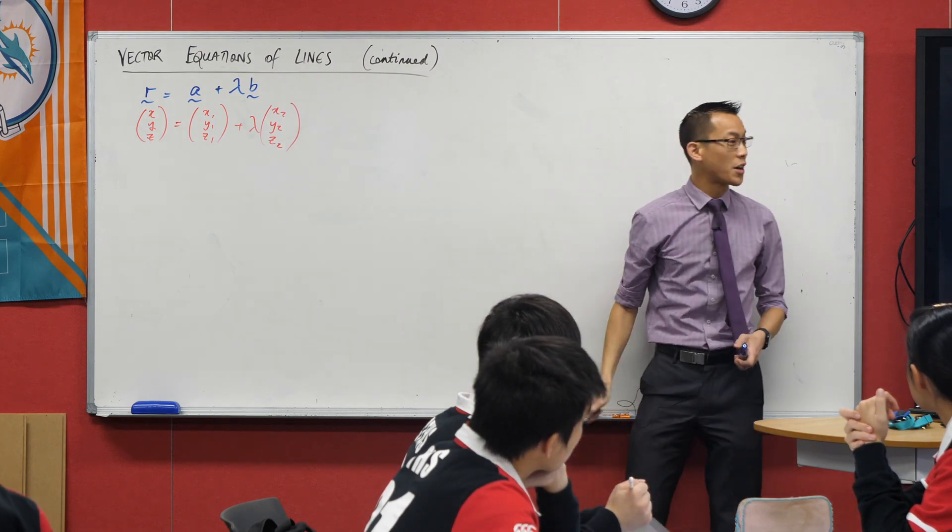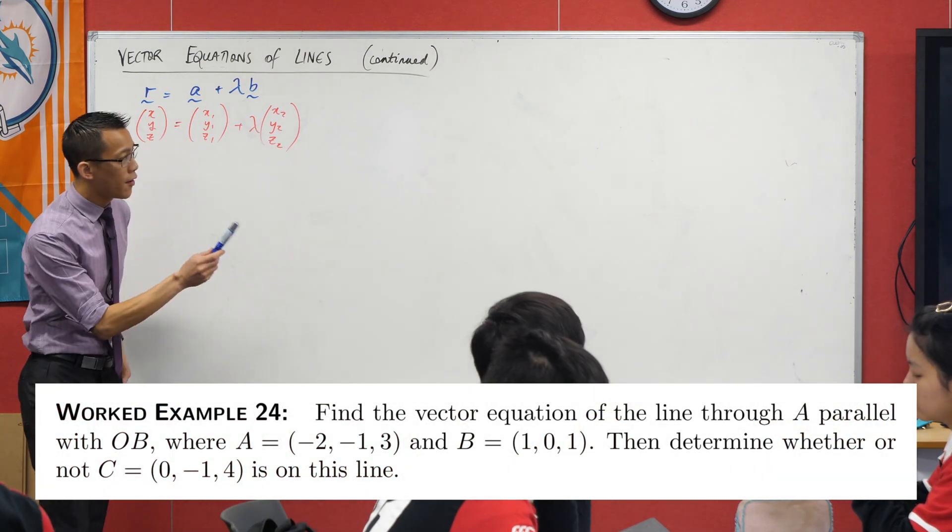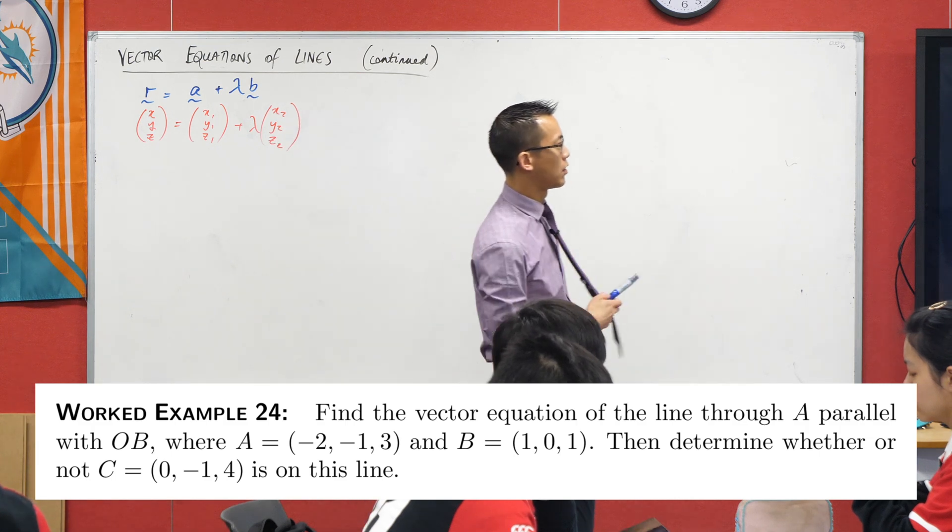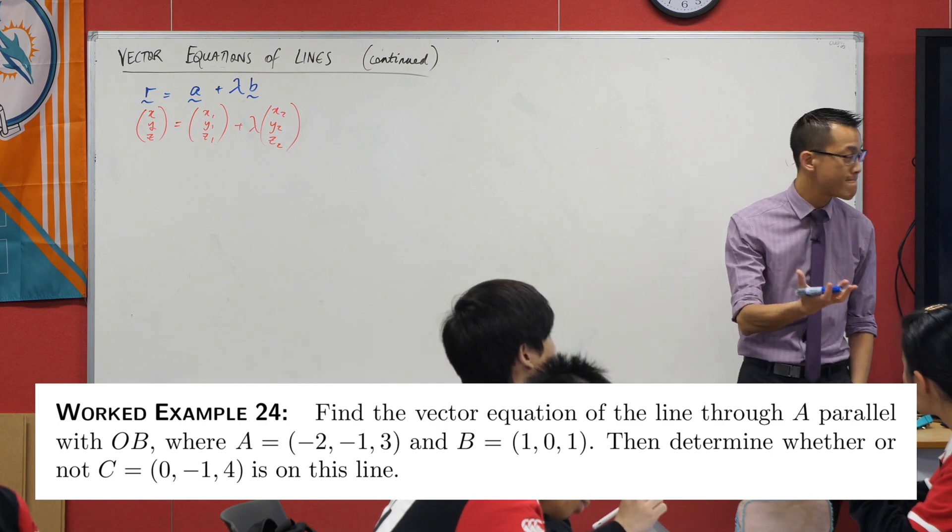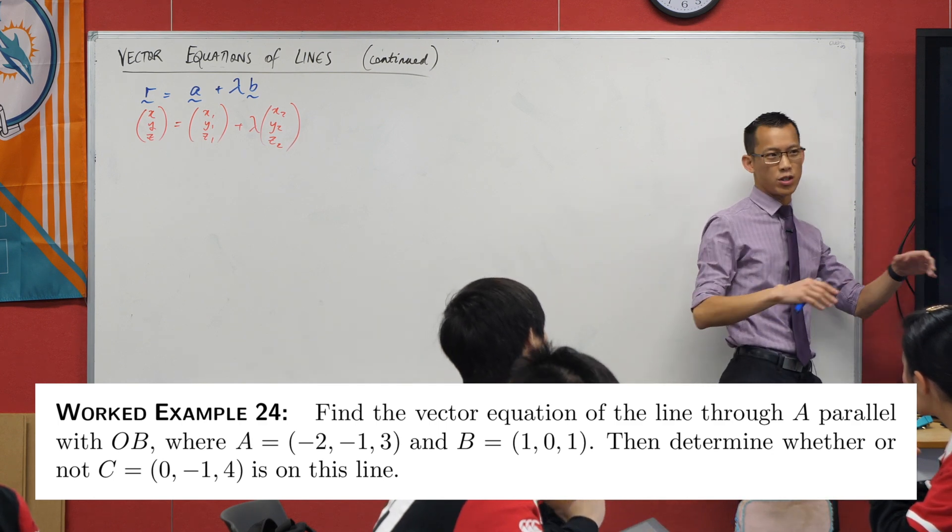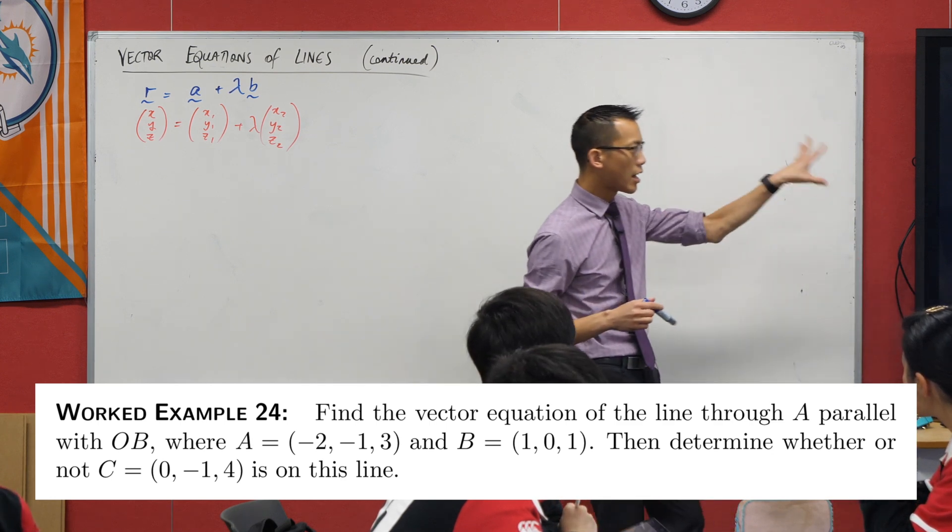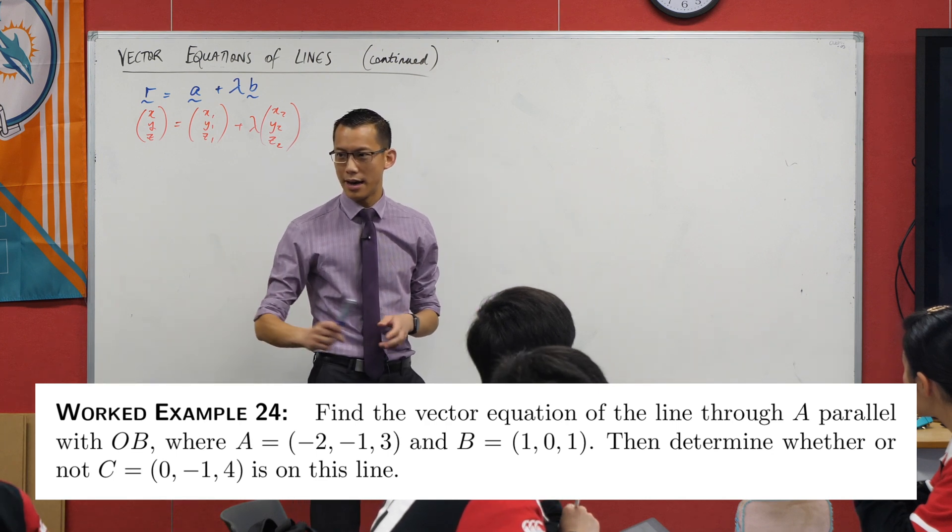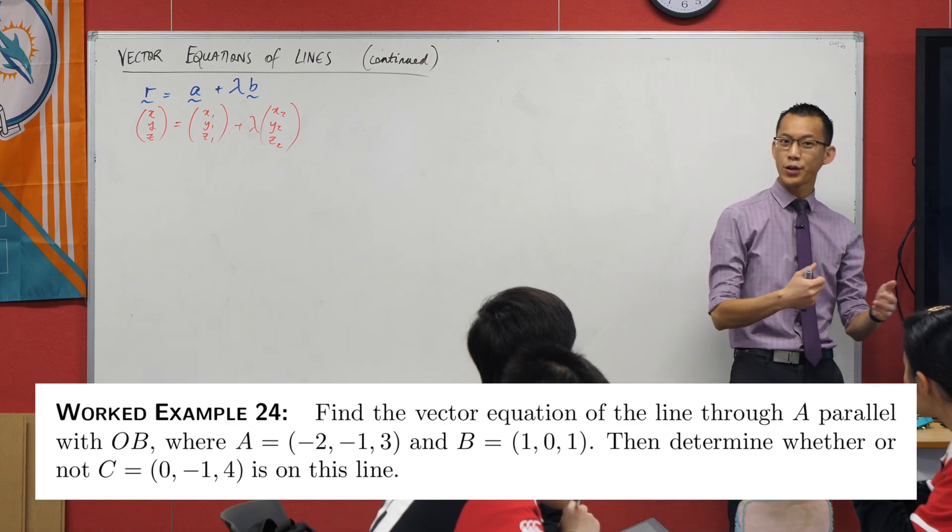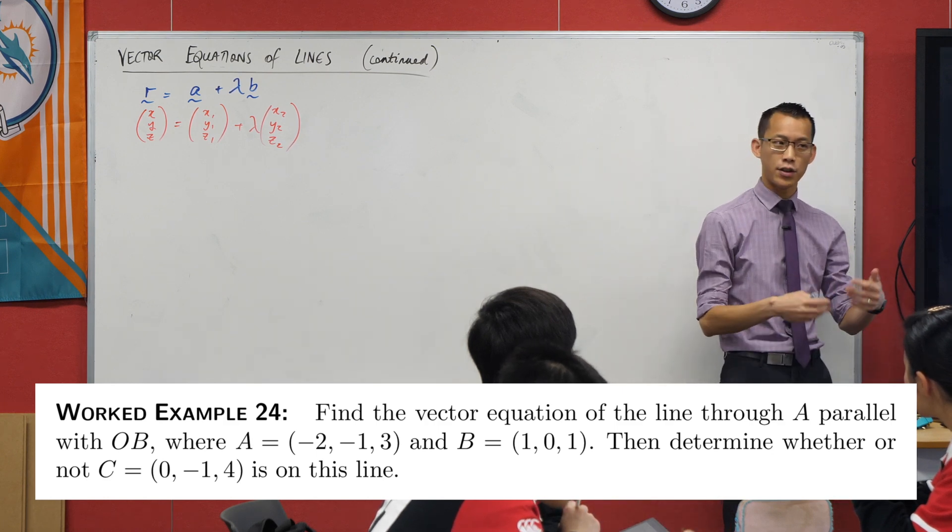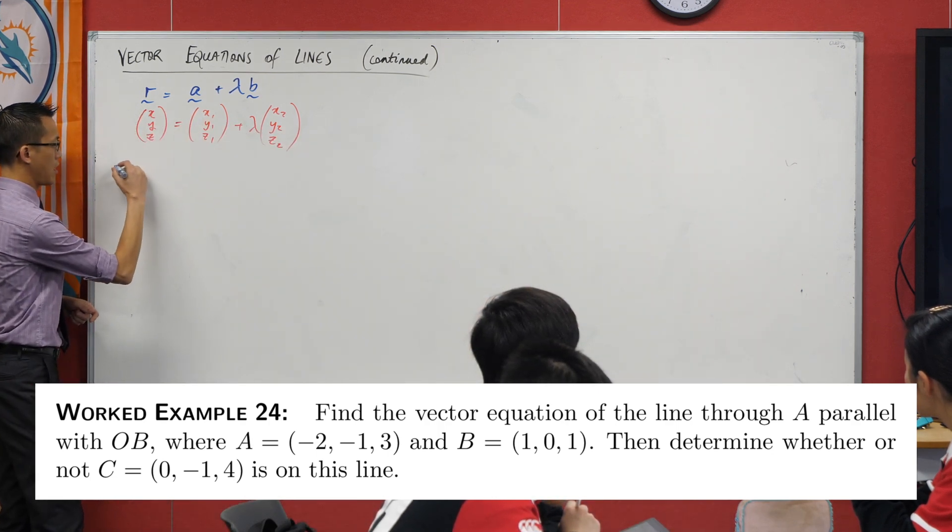As you're going to see in these examples, it is always important to have those three parametric equations in the back of your mind as you operate on these things. So what can we do with them? Have a look at this particular question. Let's try and unpack what it's doing. Find the vector equation of a line through A parallel with OB, and then they give you some A and some B.